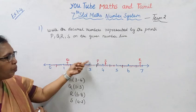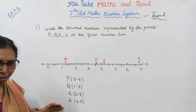The decimal numbers represented by the points P, Q, R, S are what we have written. This is how we identify decimal numbers on a number line. This channel helps you get full marks.